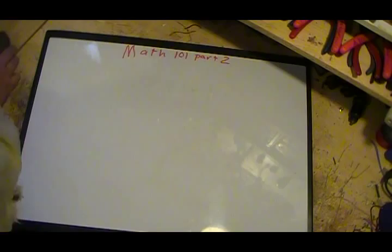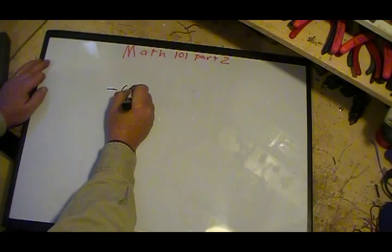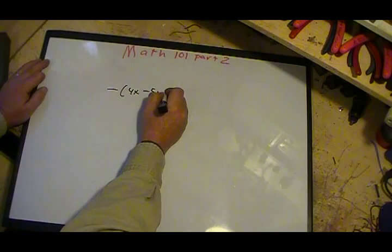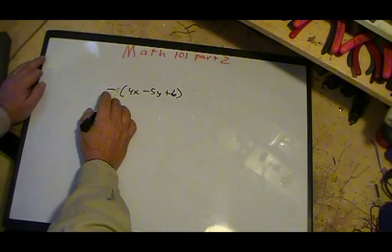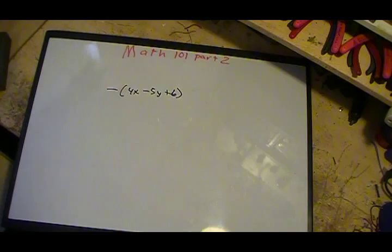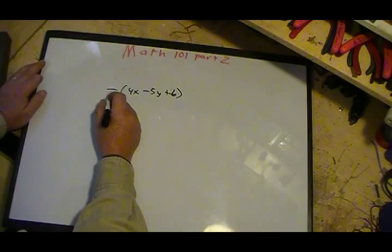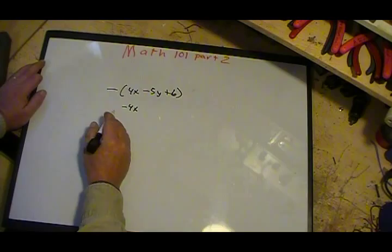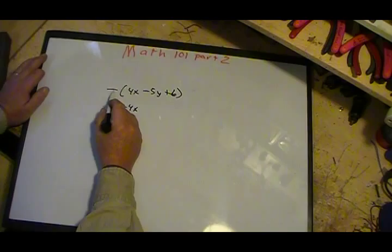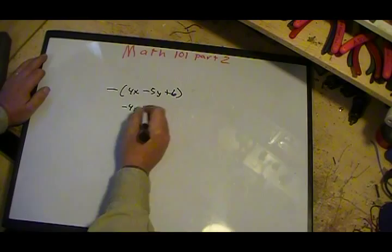And one last one would be, example would be, say, minus (4x - 5y + 6). Now I've got a negative in front of here. That's the same thing as saying, since there's nothing there it shows, we know it as a 1. So we assume there's a 1 there, so it's like a negative 1. So we distribute through, we're basically going to distribute through the negative sign. So negative 1 times 4x is negative 4x. Unlike signs, negative times positive gives us a negative. Now we have a negative times a negative gives us a positive. Negative times a positive, unlike signs, gives us a negative. And that's the answer.